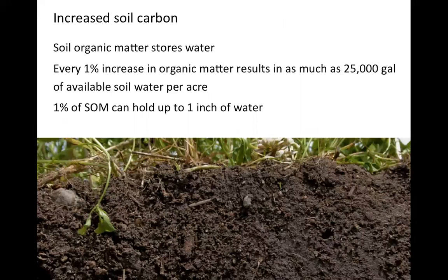We know carbon is important — it's the base we need it for food and energy to build proteins. But as we start thinking about besides just feeding a healthy microorganism community, that soil organic matter benefits us by becoming a bank account, a savings account for water. Every 1% increase in organic matter can mean as much as 25,000 gallons of soil water per acre. Another way to look at that is 1% of soil organic matter can hold up to an inch of water. So the more we keep that living root in the soil and promote healthy cover crops and healthy soil conditions, the more we're able to store water when it rains.